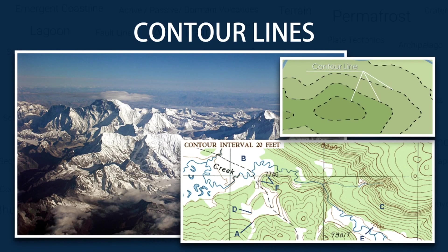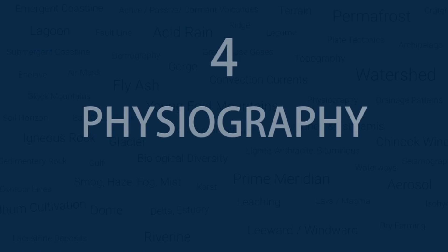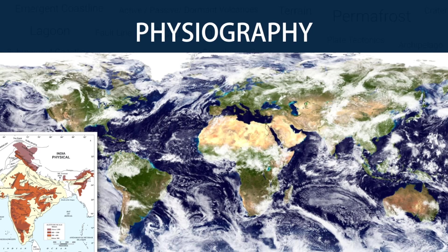A contour line, also known as isoline, isopleth or isorhythm, is a curved dotted line drawn on a topographic map joining points of equal height above or below the sea level. Physiography is another name for physical geography. It is that branch of natural science which deals with the study of processes and patterns in the natural environment, like the atmosphere, hydrosphere, biosphere and geosphere.